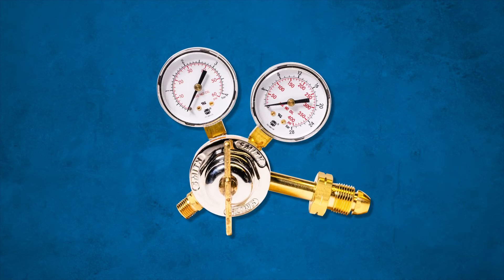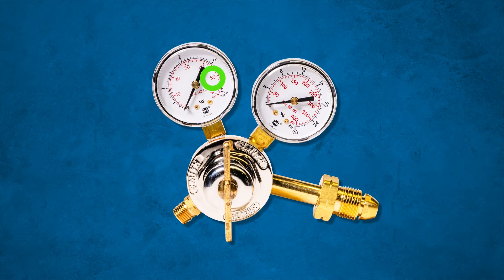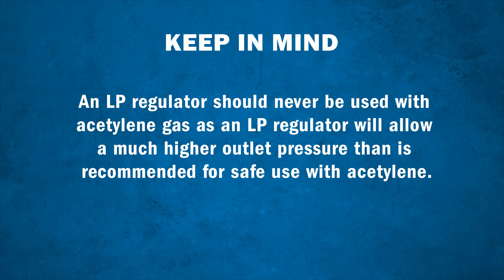It's common for LP gas regulators, such as propane regulators, to allow outlet pressures exceeding 50 psi. Because of this, you should never use an LP regulator with acetylene gas, and always make sure to choose the right regulator for the fuel gas you are using.